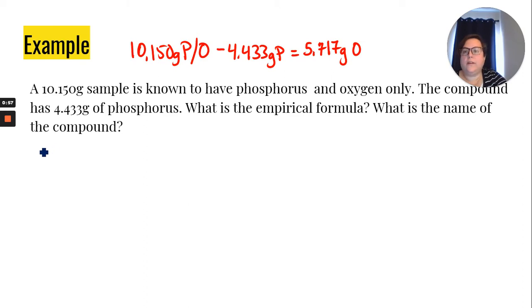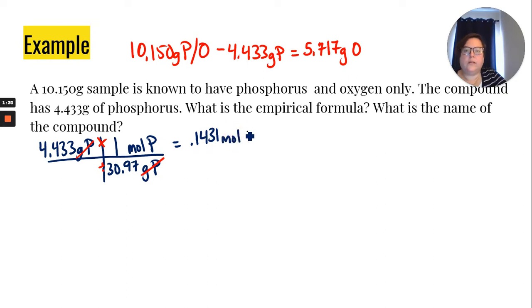First thing that we want to do is convert our masses to moles. So we bring down grams, we're converting that to moles, one mole, and then we put the molar mass off of the periodic table with grams, which is 30.97. When we multiply and divide, the grams will cancel out. And so we have, using the same number of significant figures, 0.1431 moles of phosphorus.